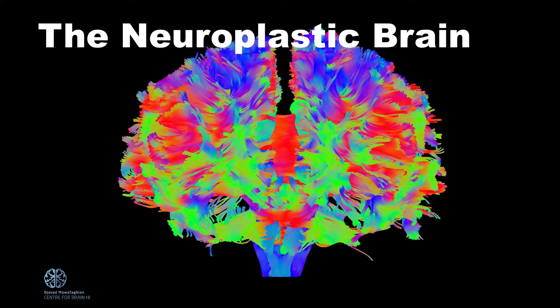This is my brain. What I'm showing you here is a diffusion weighted image of my own brain showing all the connections it's making in different directions. The color coding is quite lovely, but it's also telling us whether those connections are running side to side, front to back, and up and down.